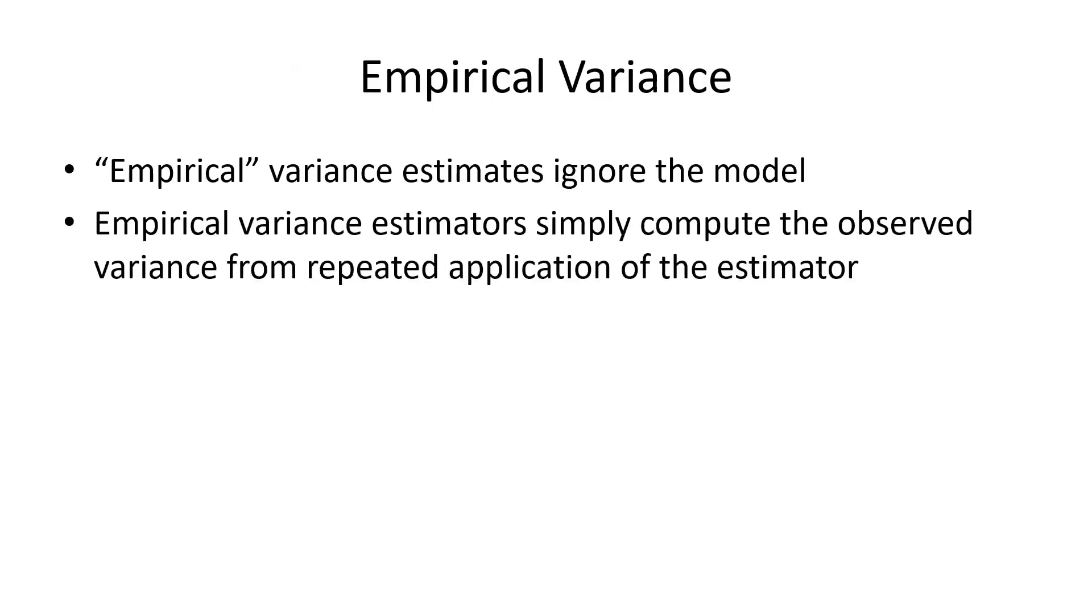Why is it called empirical variance? Because it ignores the model, right? So we still use the model to derive the estimate of beta. But we don't use the model at all to derive the estimator of the variance of beta. So empirical means it ignores the model and simply looks at what is the variability of this estimator that we can observe when repeatedly applying this estimate.